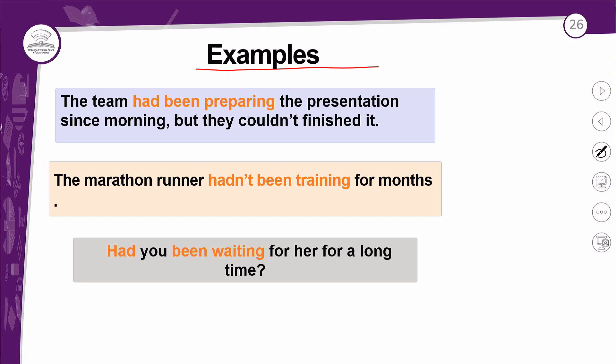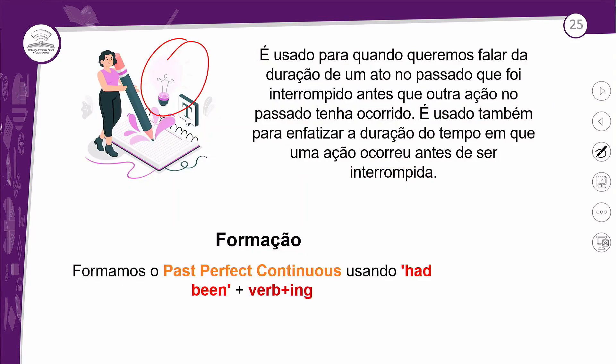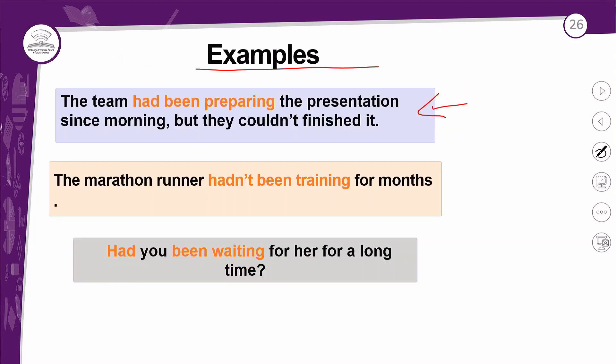Exemplos! Temos três exemplos para vocês — um na negativa, o primeiro na afirmativa e o último na interrogativa. Presta atenção: as frases no passado perfeito contínuo geralmente vão vir juntas de outra frase no passado simples, como temos aqui nesses exemplos. Porque a frase no passado simples será a ação que aconteceu depois da ação do passado perfeito contínuo — é um ato no passado interrompido antes que outra ação tenha ocorrido. Essa outra ação no passado é a ação no passado simples.